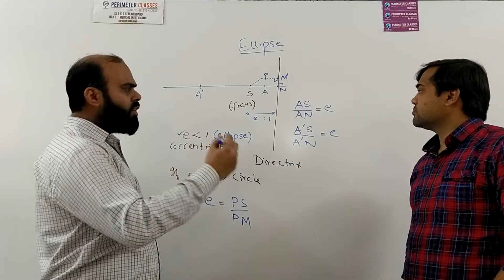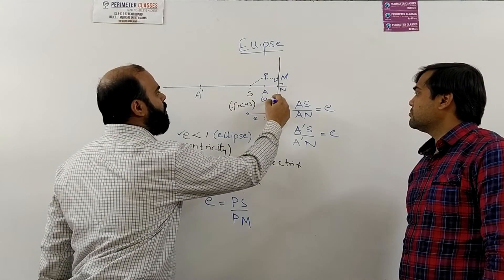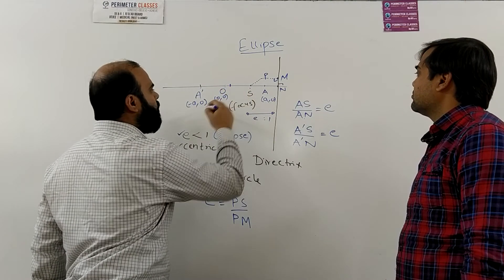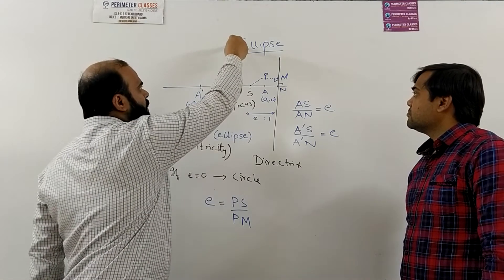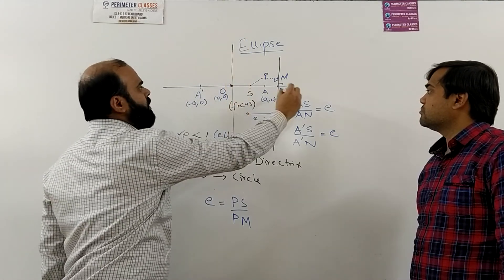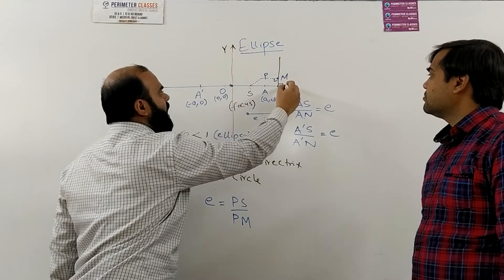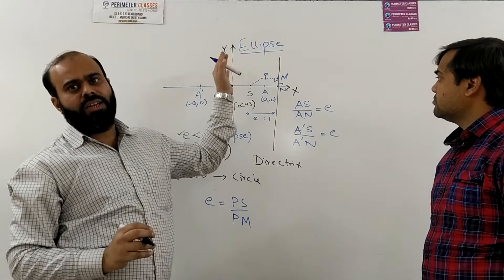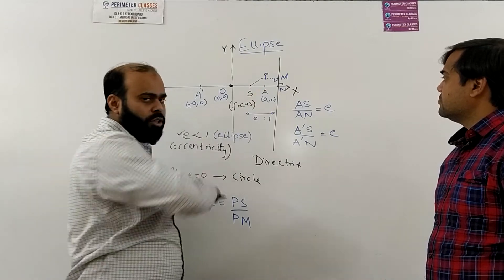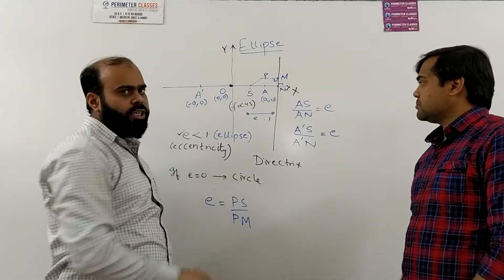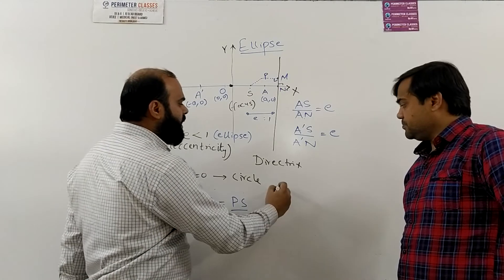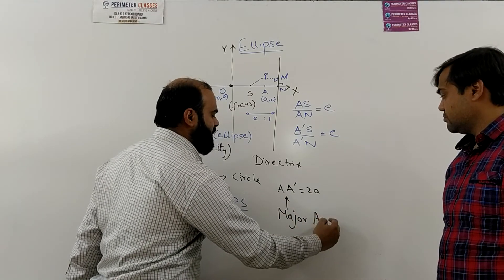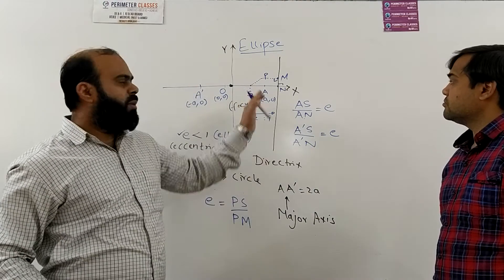So what happens: we take this A as (a, 0) and this one as (-a, 0) and the midpoint of these is taken as origin which is (0, 0). I will draw perpendicular to this origin on this blue line and we call this as y-axis and then we call this as x-axis. So after knowing x-axis, y-axis and origin you know what is the coordinate of A, that is (a, 0). What is the coordinate of A', that is (-a, 0). So the length AA' is actually 2a which is also called the major axis.